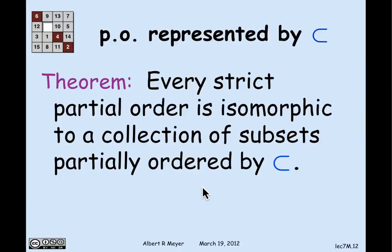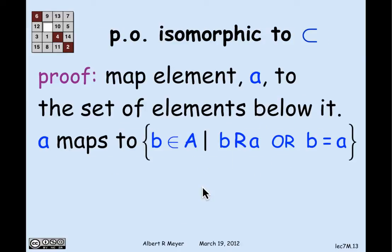And the proof, actually, of this is quite straightforward. What I'm going to do to find an isomorphism is you give me your arbitrary strict partial order r. And I'm going to map an element a in the domain of r to the set of all of the elements that are below it. That is, all of the elements that are related to r. So a is going to map to the set of b's such that b r a, or b is equal to a.